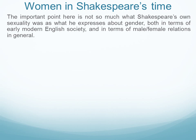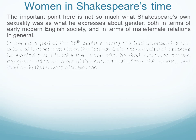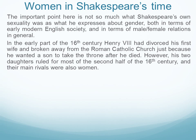What we need to be thinking about is what Shakespeare is expressing about gender in terms of society and male-female relationships — what he's saying about human nature generally. We've got Henry VIII divorcing his first wife and breaking away from the Roman Catholic Church in the earlier part of the 16th century, before Shakespeare was born. He wanted a son to take the throne, but it was his two daughters who actually had the big influence on the development of the 16th century.